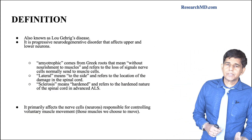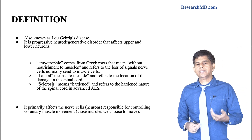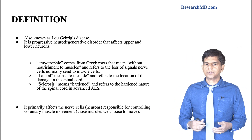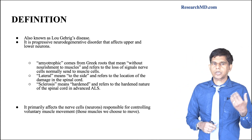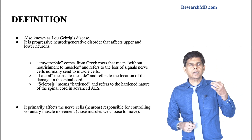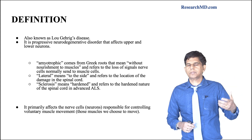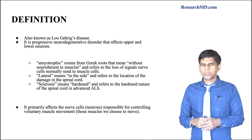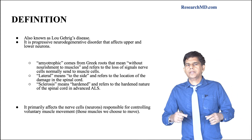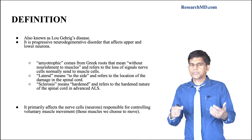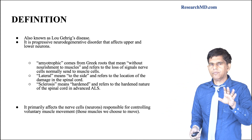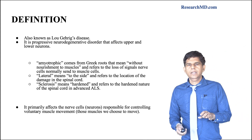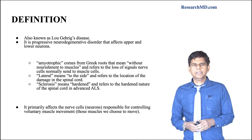ALS is a fatal disease that affects upper and lower motor neurons. Breaking down the name: 'amyotrophic' means without nourishment of the muscles, 'lateral' means side, and 'sclerosis' means hard — referring to the hardening seen in advanced disease. So the question is: how does it work, how does it affect the nervous system?